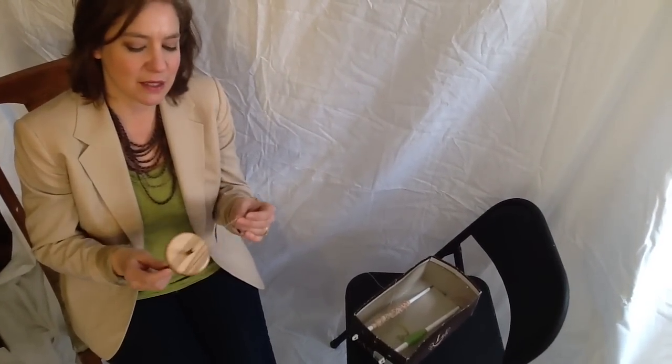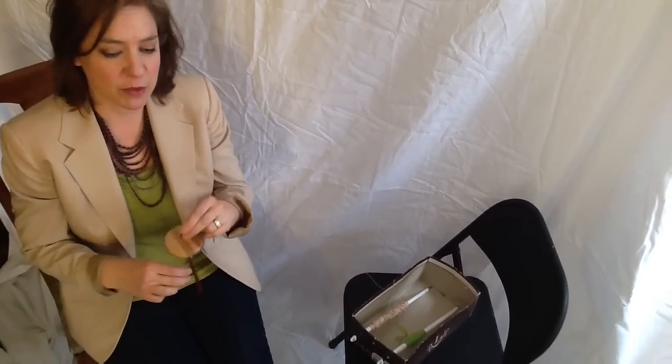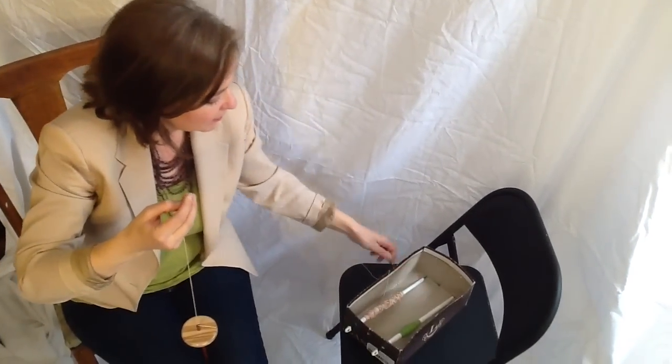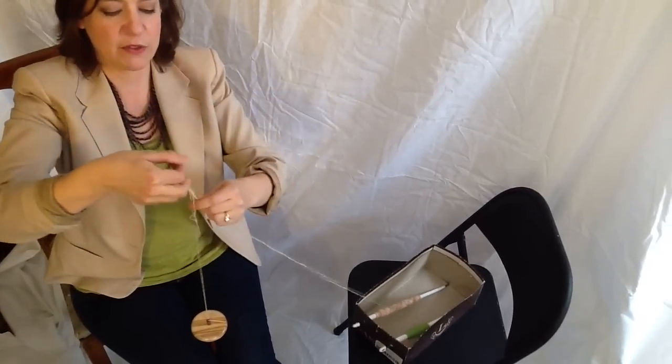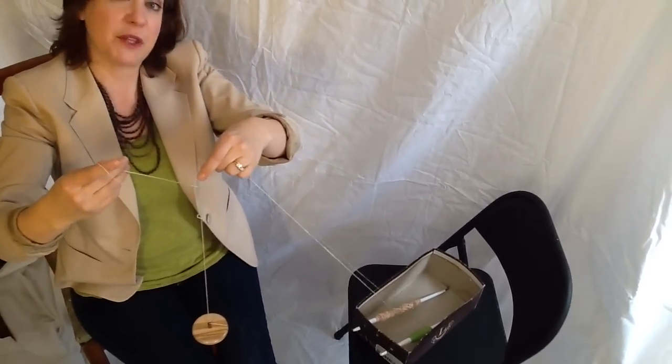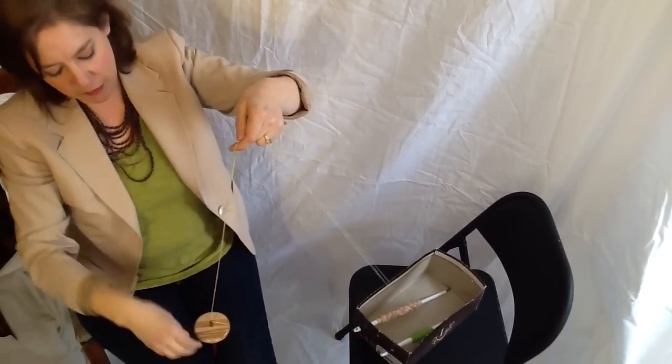So it's time to ply. Plying on a drop spindle can be a little tricky. It's easier on a wheel, I find, but it's still absolutely possible. I'm going to take each of my strands from my singles that I've spun earlier. I'm going to feed them through the loop, just like I did when I started spinning. I'm going to hold onto them.